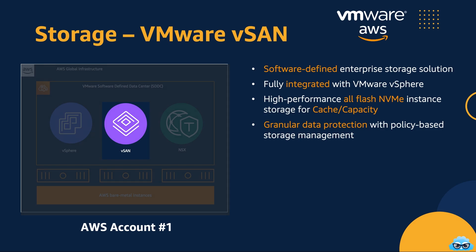Now, let's dive into the storage layer of VMware Cloud on AWS, where the magic of VMware vSAN unfolds. VMware vSAN is a cutting-edge, software-defined storage solution seamlessly integrated with vSphere. The foundation of vSAN consists of all-flash NVMe disks — ultra-fast, non-volatile memory express drives that deliver lightning-fast performance. These all-flash NVMe disks are combined into storage capacity and cache tiers. The cache tier accelerates data access, while the capacity tier stores your data efficiently and reliably. On top of these storage tiers, you have the power to create your data stores.